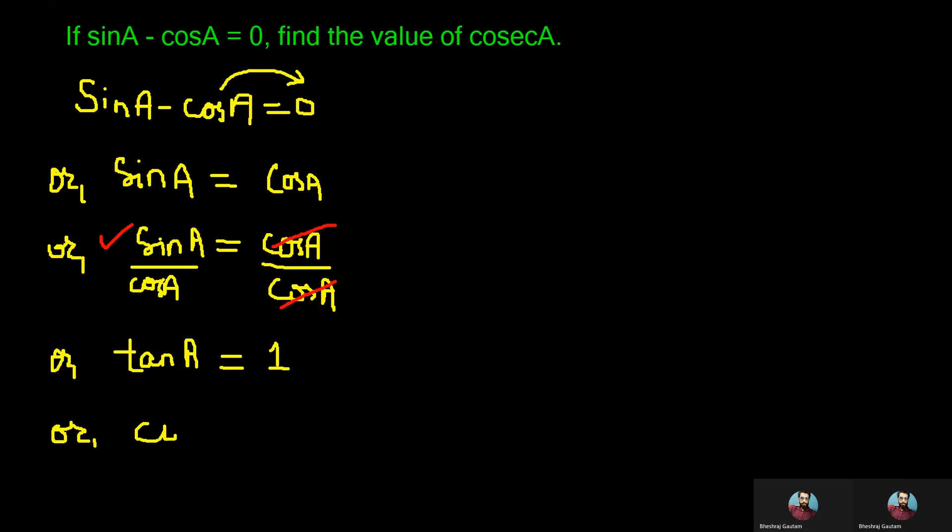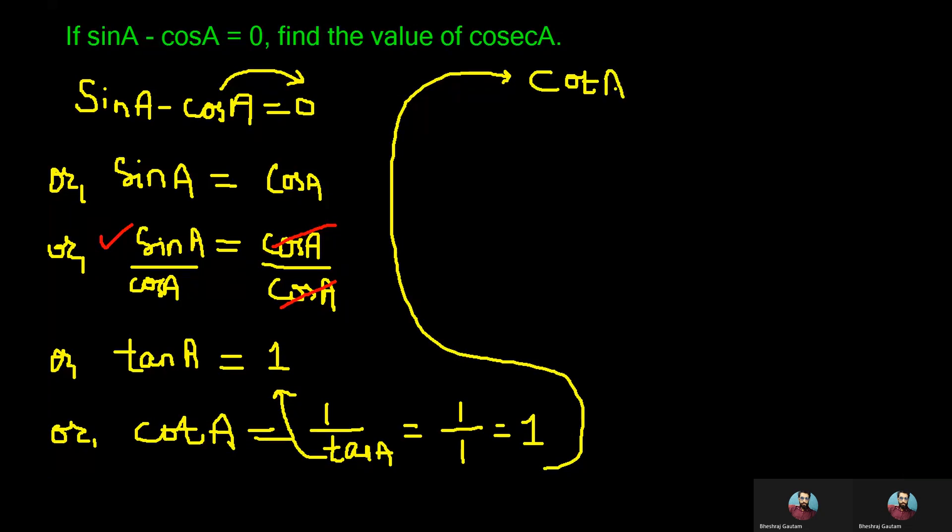Now let's find the value of cotA where we can write it as 1 by tanA and putting the value of tanA from the above step we can write 1 by 1 which will give the product as 1. So from this step we got to know that cotA is equal to 1 here.